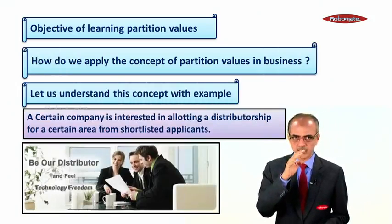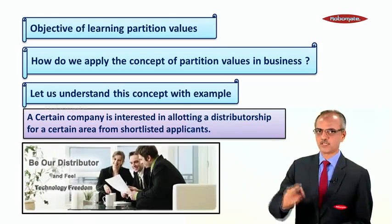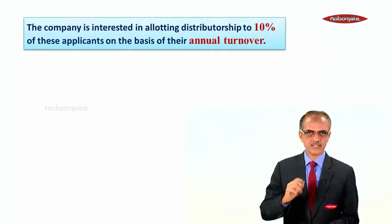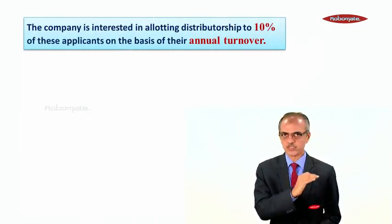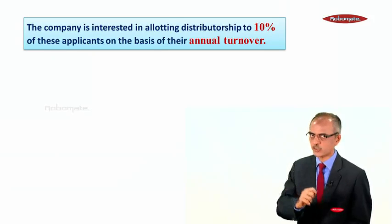A certain company is interested in allotting a distributorship for a certain area from shortlisted applicants. The company is interested in allotting distributorship to 10% of these applicants on the basis of their annual turnover.